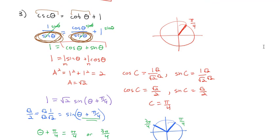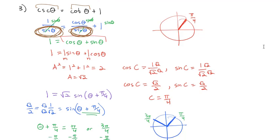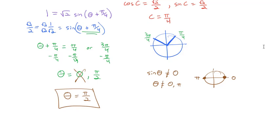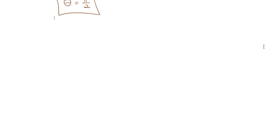We actually did several things in that problem: first we changed everything to sines and cosines, then we rewrote sine plus cosine as a single sine, and then we solved the resulting equation. So we've got lots of strategies that we can pull together now to try and solve.